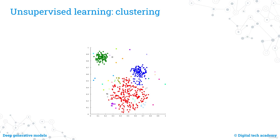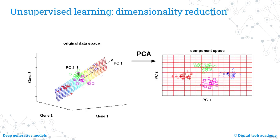Clustering is a data mining technique that groups unlabeled data based on their similarities or differences, processing raw, unclassified data into groups represented by structures or patterns in the information. Dimensionality reduction is the transformation of data from a high-dimensional space into a low-dimensional space, such that the low-dimensional representation retains meaningful properties of the original data. Working in high-dimensional spaces can be undesirable because raw data is often sparse and analysis is computationally intractable, making dimensionality reduction a beneficial technique.